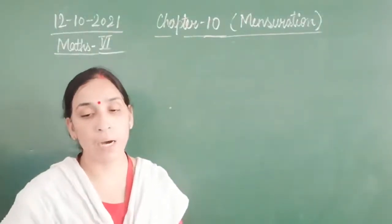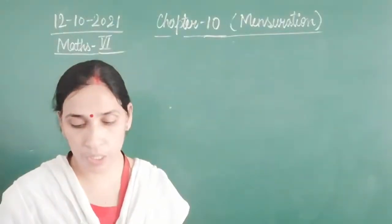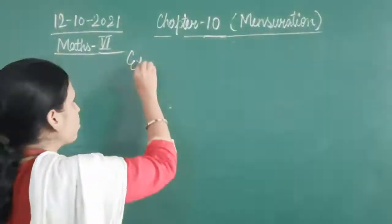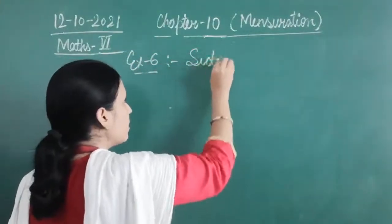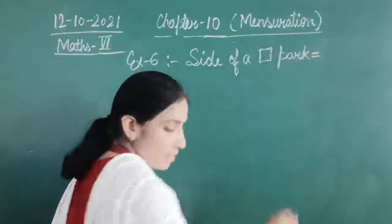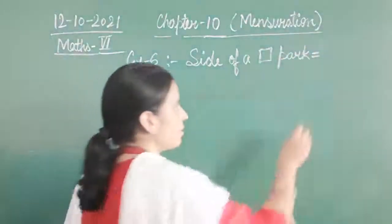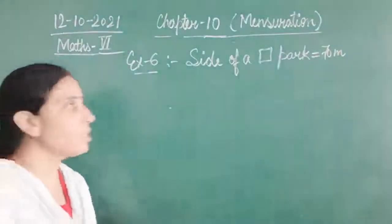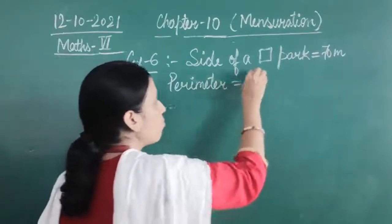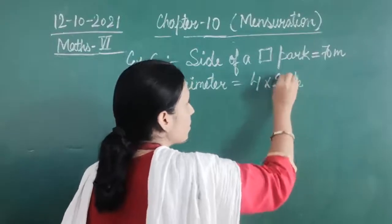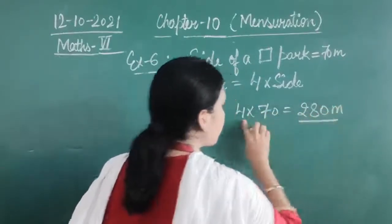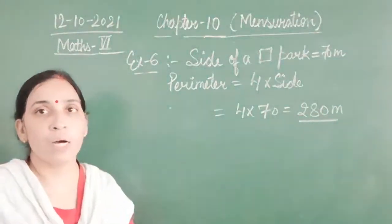How much distance was covered by Shaina if she took three rounds of a square park of side 70 metres? Side of a square park is given as 70 metres. For a square, perimeter will be 4 into side, so 4 multiplied by 70 will become 280 metres. Two 7s are 14, carry the 2 — 280 metres.